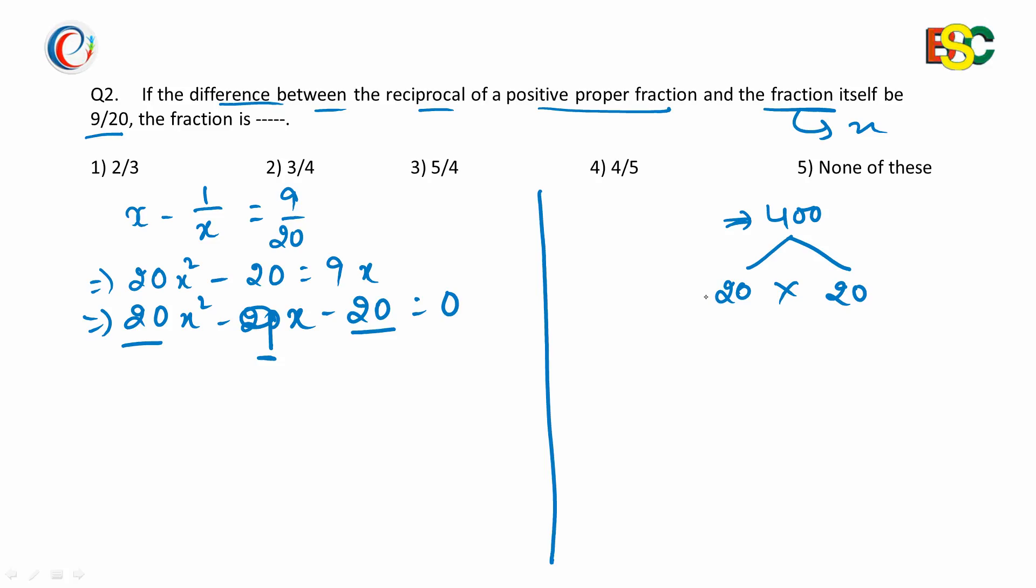We increase the value of 20 and simultaneously decrease its value because we have 400 as the constant. Since 400 is a multiple of 5, one of the factors must be a multiple of 5. Therefore, we won't consider numbers from 21 to 24, so we'll take 25 as the next factor of 400.